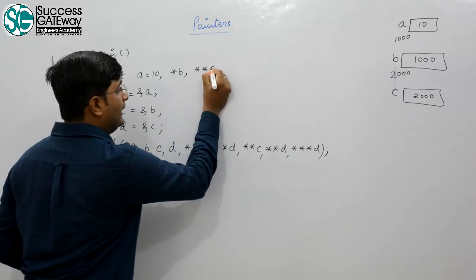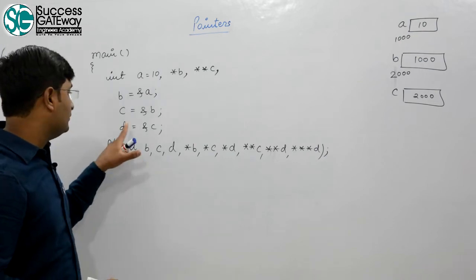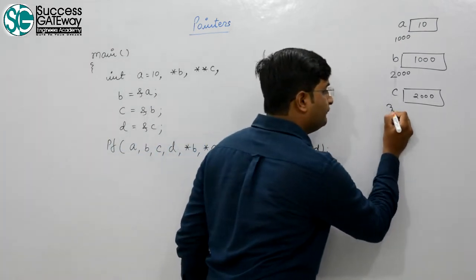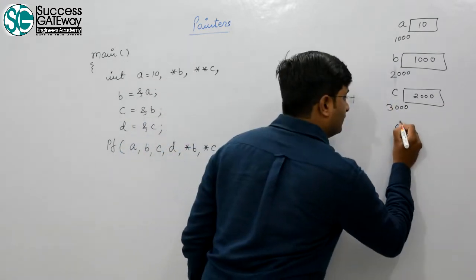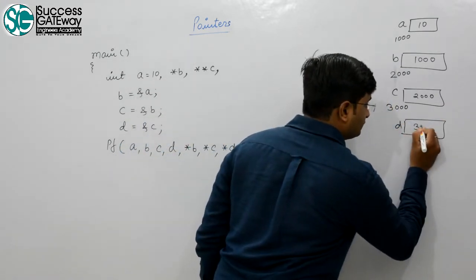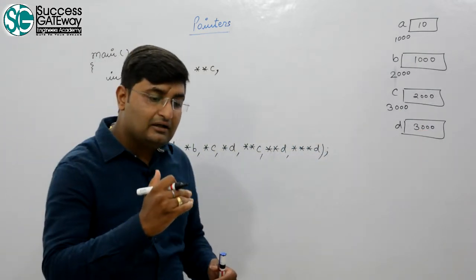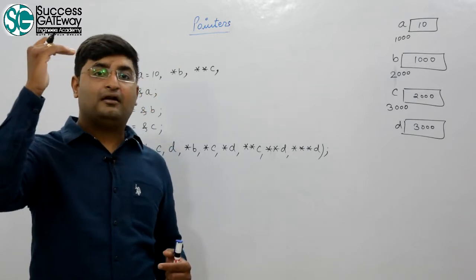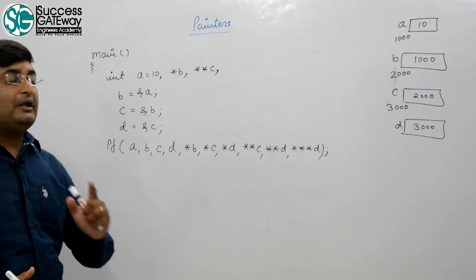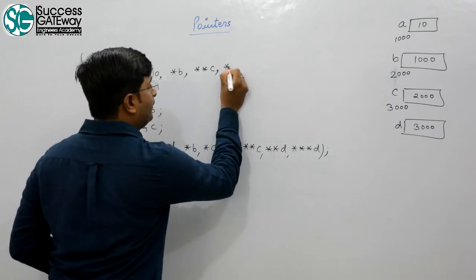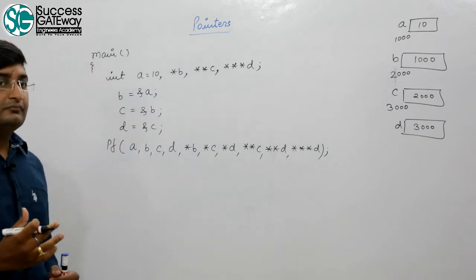c is declared as int **c. Now d is holding the address of c. Let the address of c be 3000, so d is holding 3000. Since 3000 is the address of a pointer to pointer to integer, the declaration of d should be pointer to pointer to pointer to integer — int ***d.